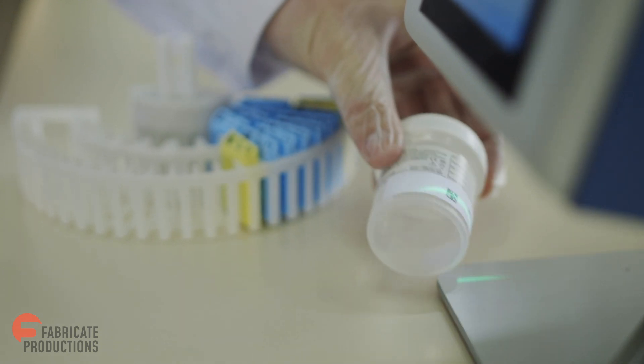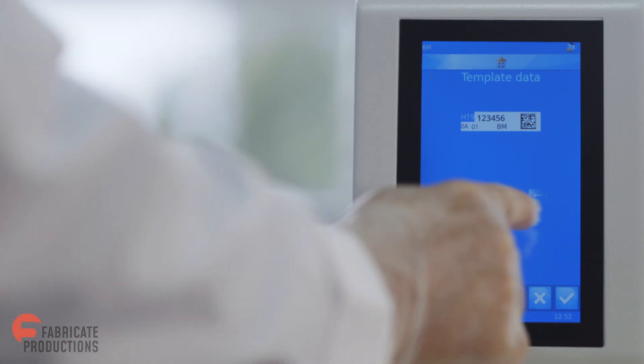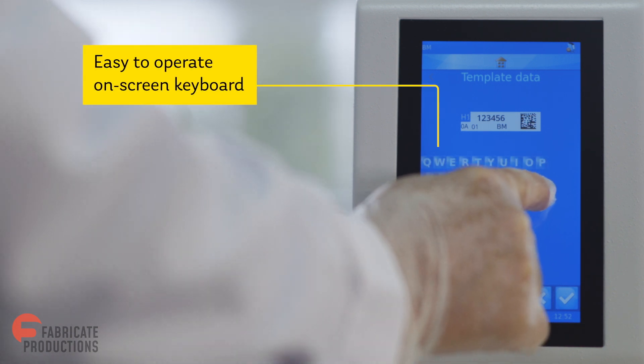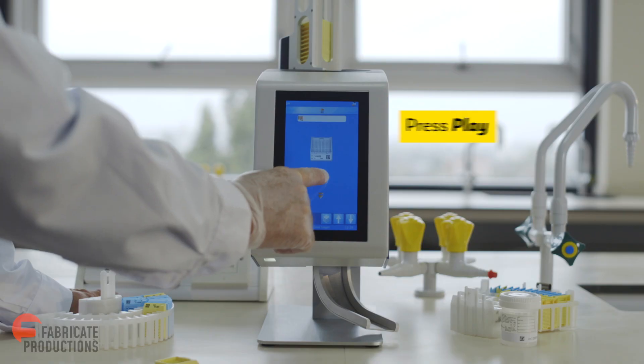Scanning a container or requisition slip automatically transfers the sample ID to the cassette label image. Case information can be typed in using the keyboard or simply by pressing play.